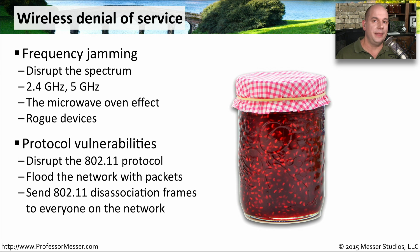Another method is to send 802.11 disassociation frames to all of the devices on the wireless network. That's a more intelligent attack, and that's another good reason why you want to maintain an encryption method on all of your wireless networks.